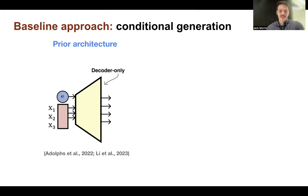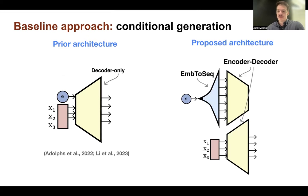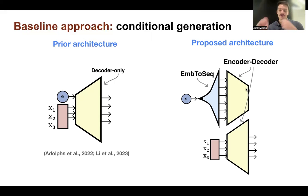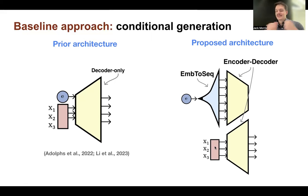We wanted a way where at every layer, the text being produced can look back at the embedding and alter its representations. Our proposed architecture uses an embedding-to-sequence projection — a small MLP that takes an embedding and produces something that looks like a sequence. Then instead of a decoder-only model, we use an encoder-decoder with interwoven cross-attention, where the sequence representing the embedding in the encoder gets integrated into the decoder's representations at each layer. We found this works much better for conditioning model output on an embedding.